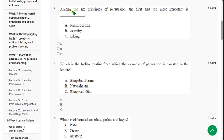Among the six principles of persuasion the first and most important is reciprocation. It is the most important and first one of all the six principles of persuasion. So mark option A.